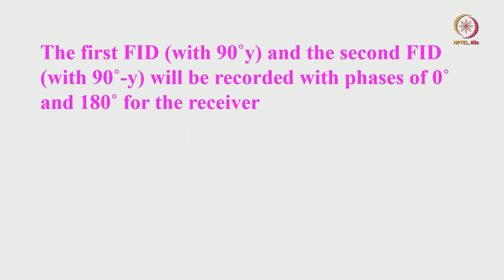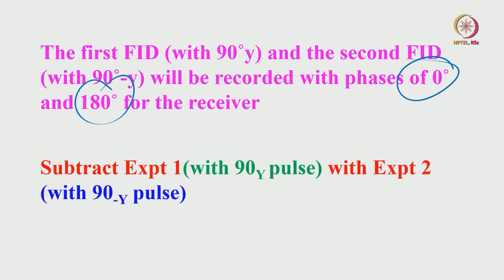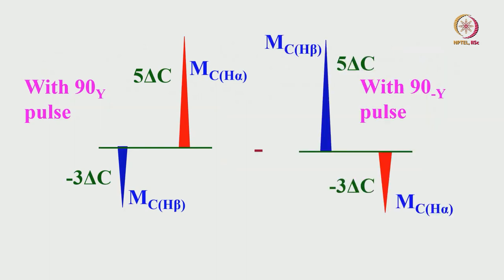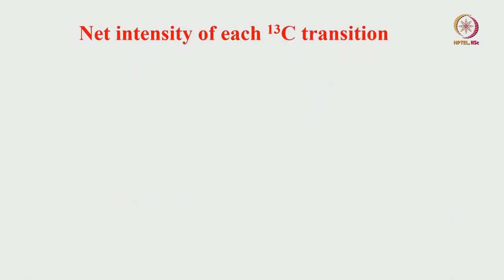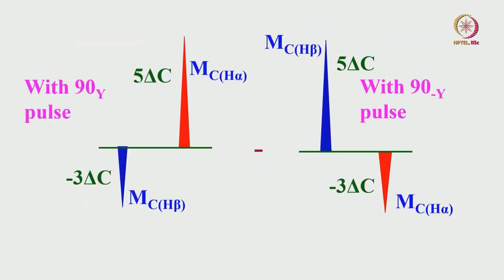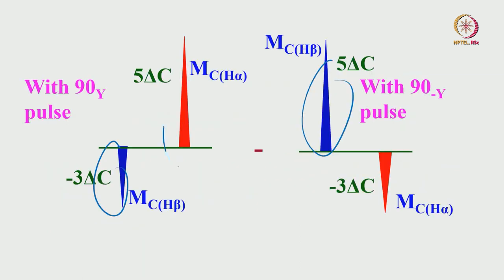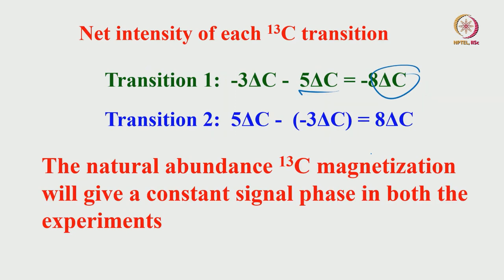The first and second FIDs are recorded through two phases of 0 degree and 90 degree for the receiver. We subtract experiment 1 from experiment 2. The net intensity: minus 3 minus plus 5 gives minus 8; and with the other, plus 5 minus of minus 3 gives plus 8. So the intensity is minus 8 and plus 8 — gone up 4 times. The natural abundance carbon-13 gives a constant phase signal in both experiments.